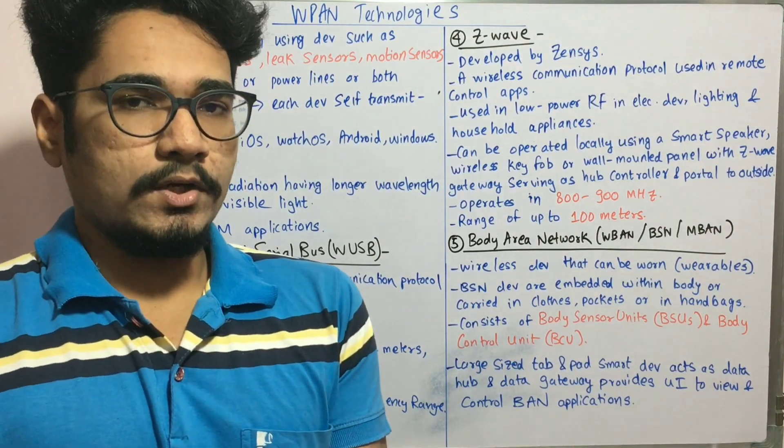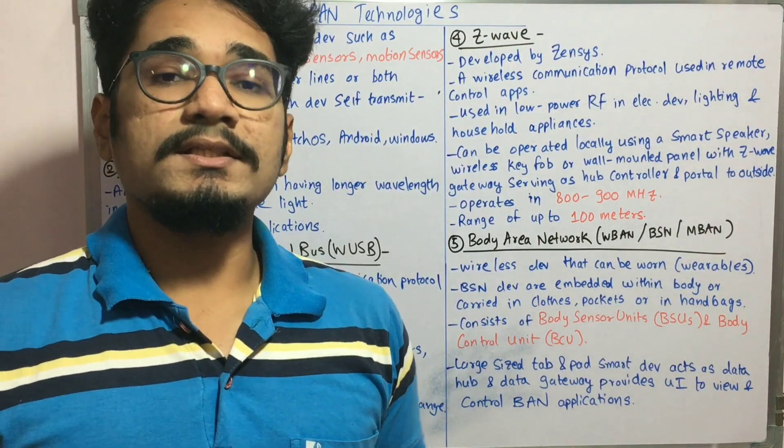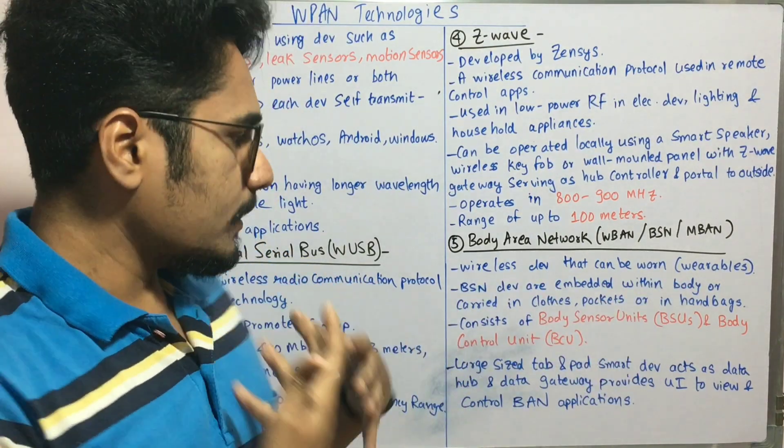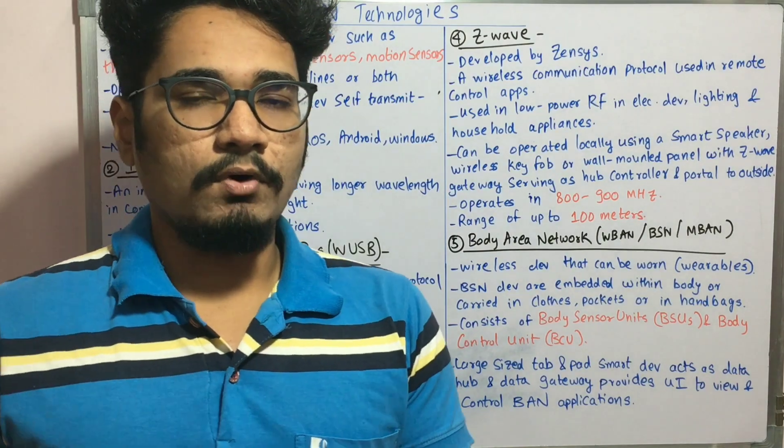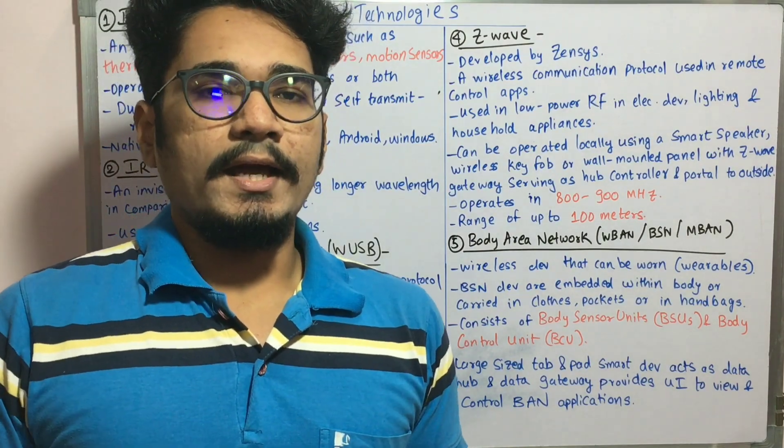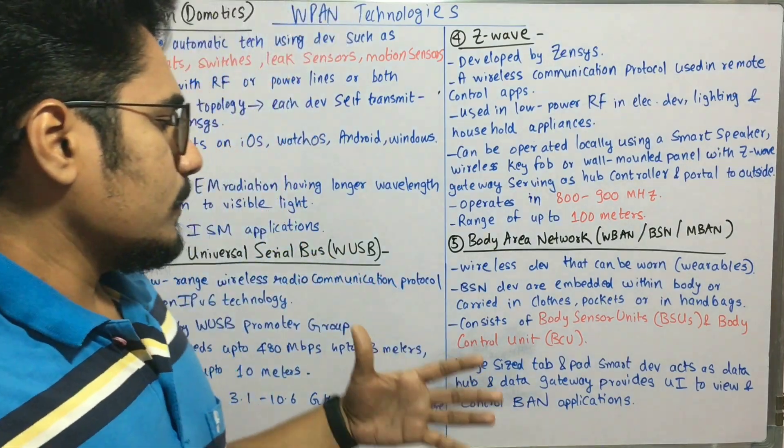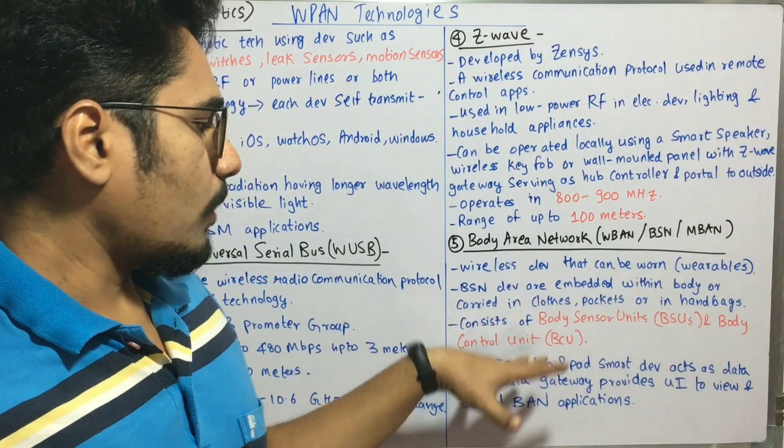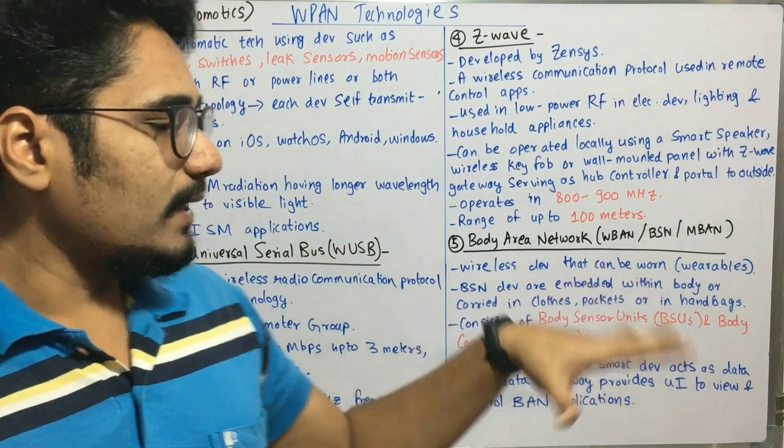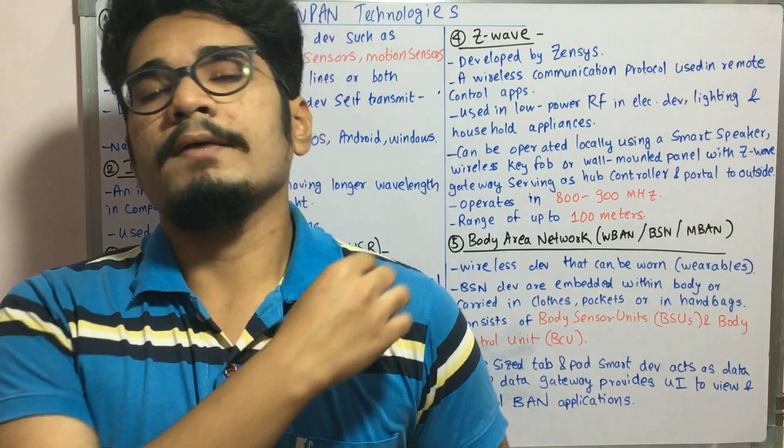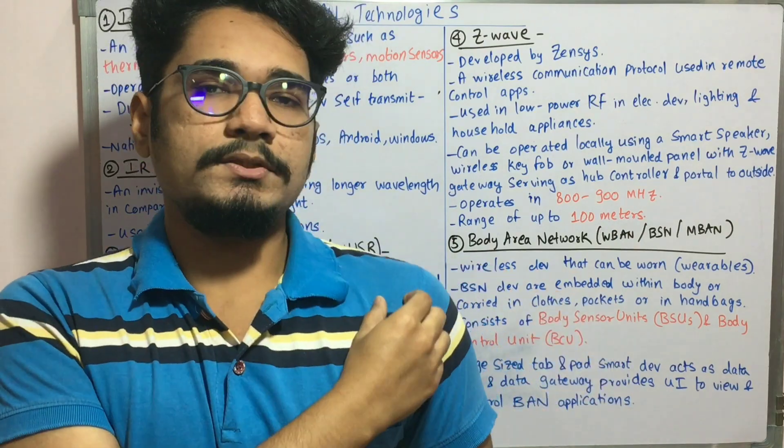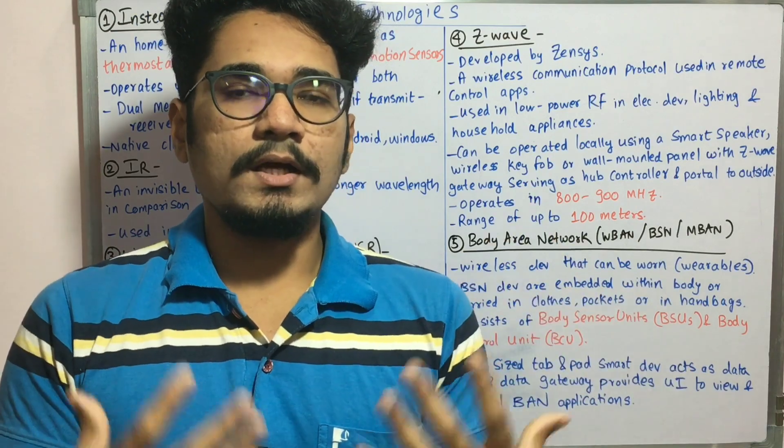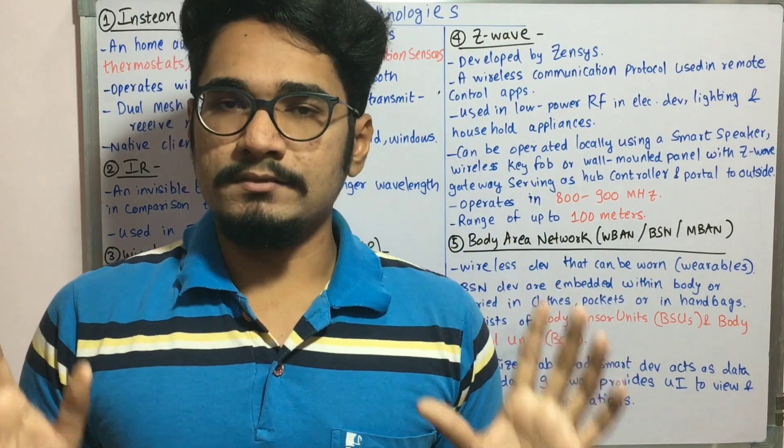That's majorly used in cyborg kind of things. It can also be carried in clothes or pockets or wallets or handbags. It mainly consists of body sensor units, BSUs, and body control units. There are multiple BSUs—you may put one BSU here, one BSU there—and those BSUs are controlled with the help of one single body control unit, that is BCU.